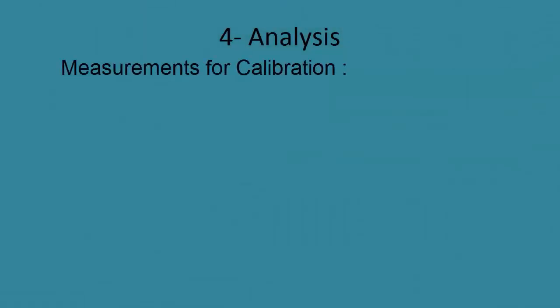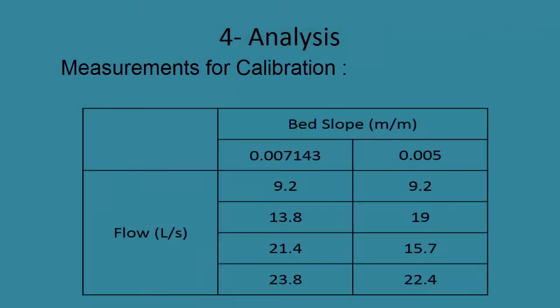After lab work of calibration, we collected data for slope of 0.007 and slope of 0.005, and flow ranges from 9 to 24 liters per second for each slope.